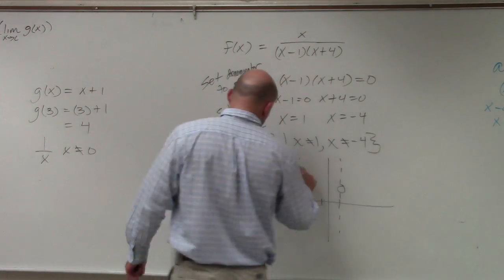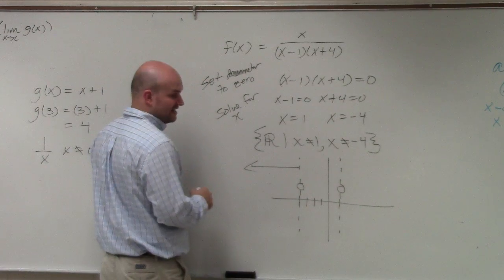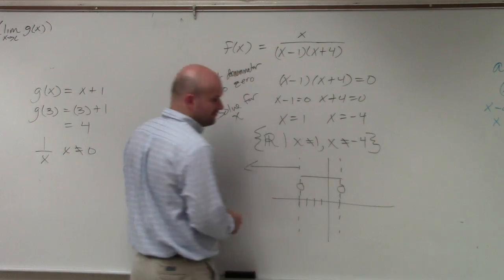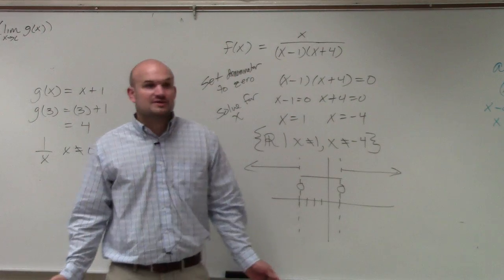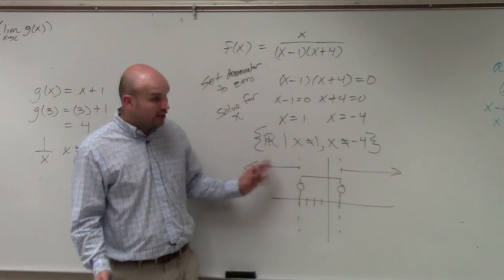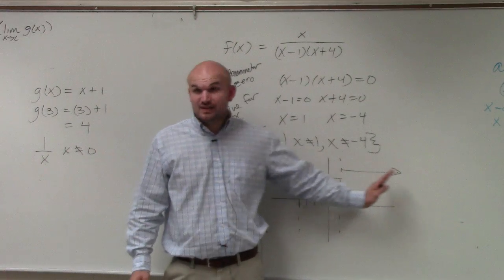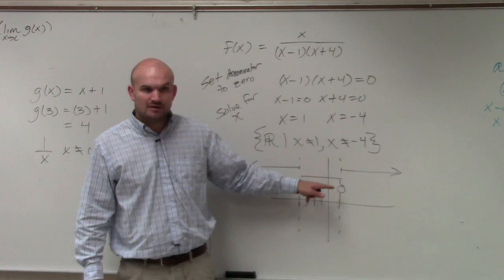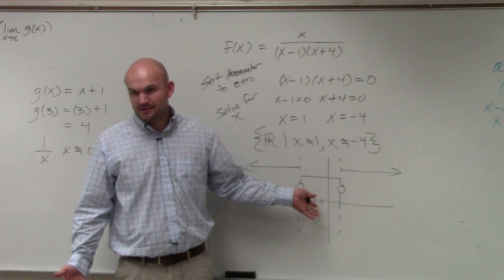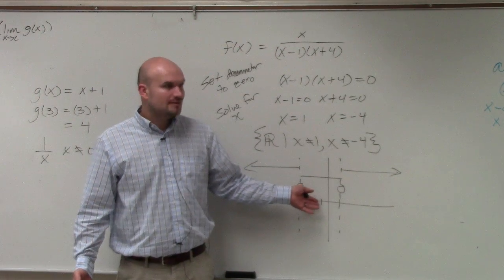We just need to know the graph can't equal negative 1 and 4. So I'm going to have a graph going to negative infinity between negative 1 and 4, and then going from 1 to infinity. I don't know what the graph looks like. I have no idea. But all I know is, the graph is continuous for all values except for 1 and negative 4. Does everybody agree with me on that?